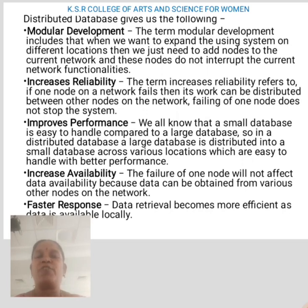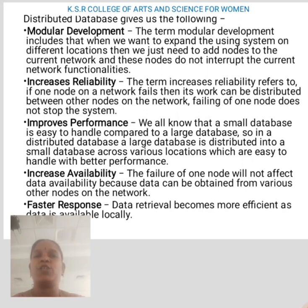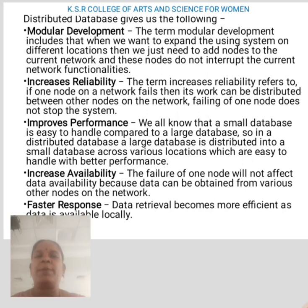Improved performance: a small database is easier to handle compared to a large database. In a distributed database, a large database is distributed into smaller databases across various locations, which are easy to handle with better performance. Increased availability: the failure of one node will not affect data availability because data can be obtained from various other nodes on the network. Faster response: data retrieval becomes more efficient as data is available locally.